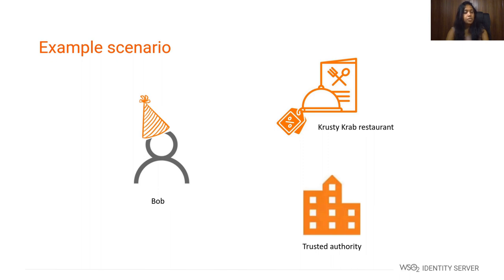To make it easy to understand how Verifiable Credentials can be used, let's look at an example scenario. We will use the same scenario as in the previous session. Here is Bob, whose birthday is on June 27th, and here is Crusty Cap, who offers a 30% discount on their customer's birthday. To claim the offer, Bob can prove his birthday via Verifiable Credentials offered by a trusted party, for example, the government.